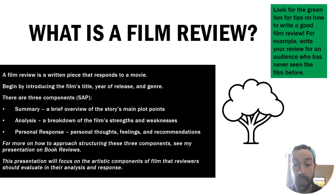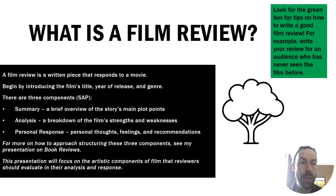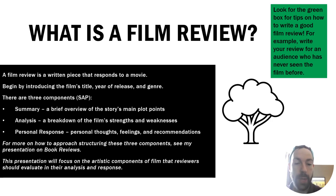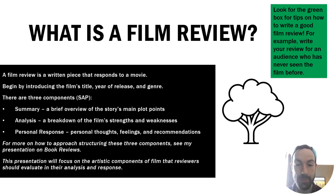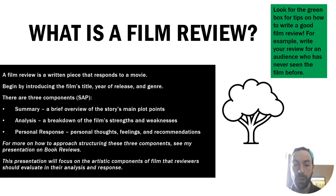Then you're going to have three components that I remember with the acronym SAP — like the sap of a tree. They need to come in this order. The S is for summary: a brief overview of the story's main plot points. You may want to avoid spoilers, so don't give away key plot twists or the ending. The A is for analysis: a breakdown of the film's strengths and weaknesses. And P is for personal response — your thoughts, feelings, and recommendations regarding the film.